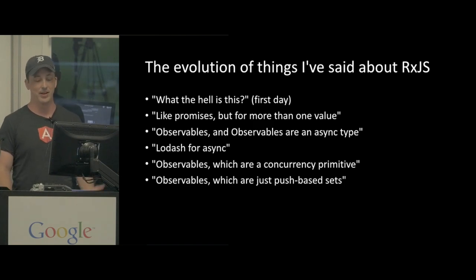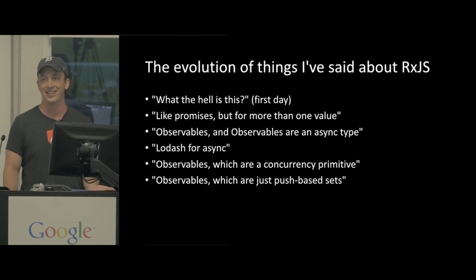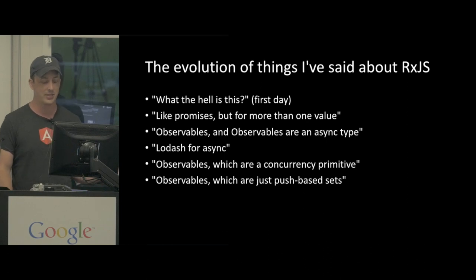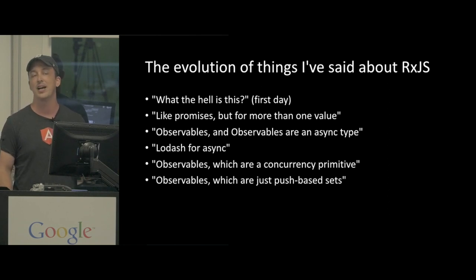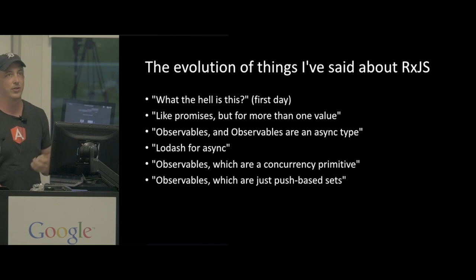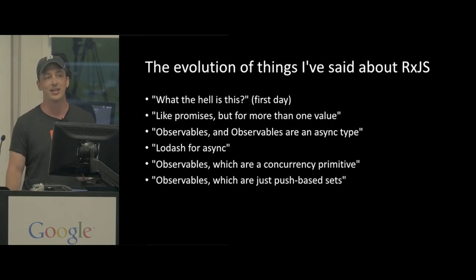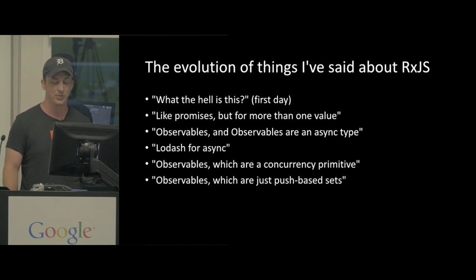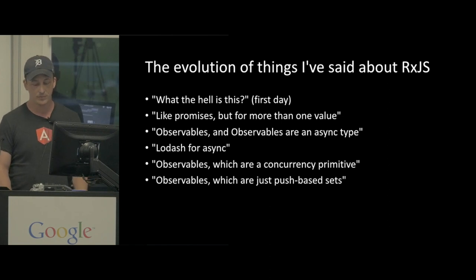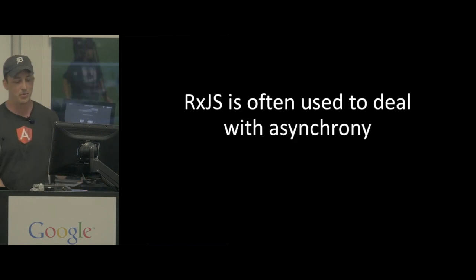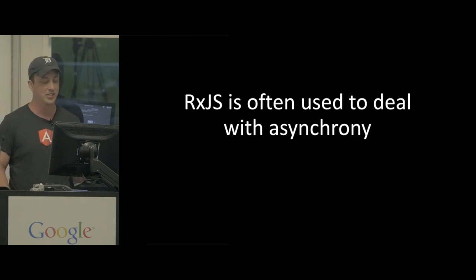Here's the evolution of things I've said about RxJS. First day I looked at it: what the hell is this? I thought it looked like another lodash - why do I need this? I've told people it's like promises, but for more than one value. Observables are an async type. It's lodash for async. Or lodash for events. What I've settled on is observables, which are just push-based sets. RxJS is often used to deal with asynchrony, but it's not an async type - it's just frequently used to deal with asynchrony.